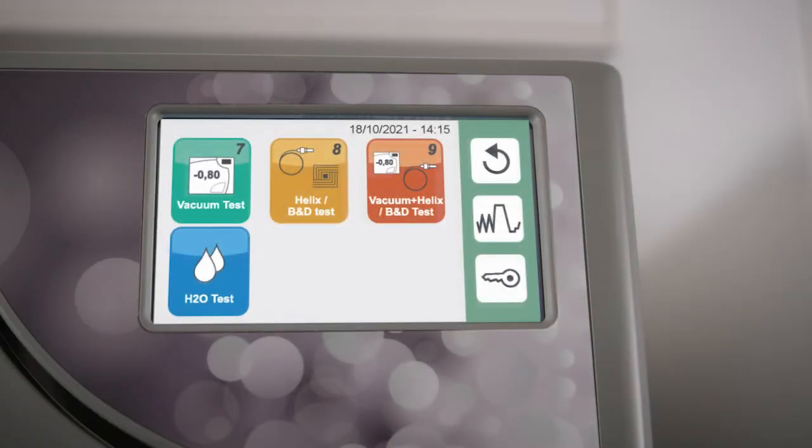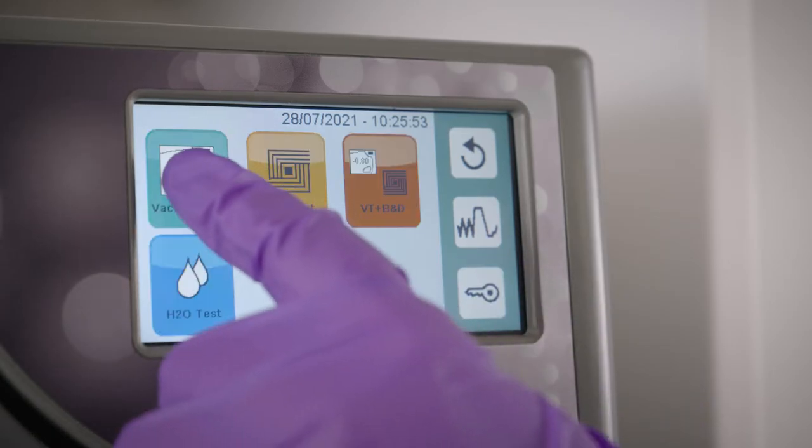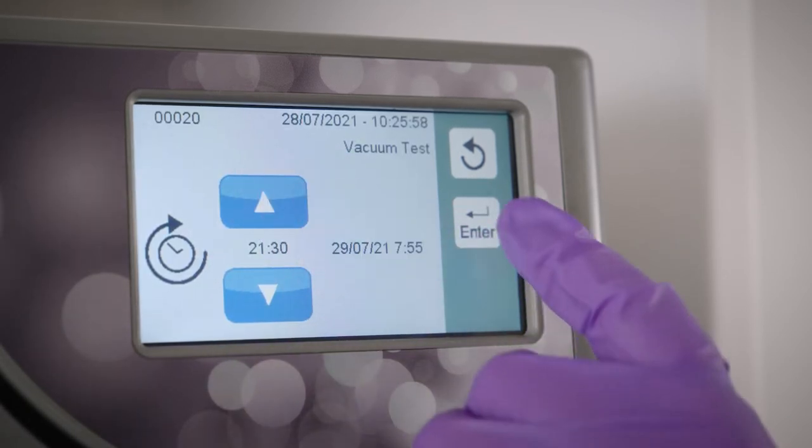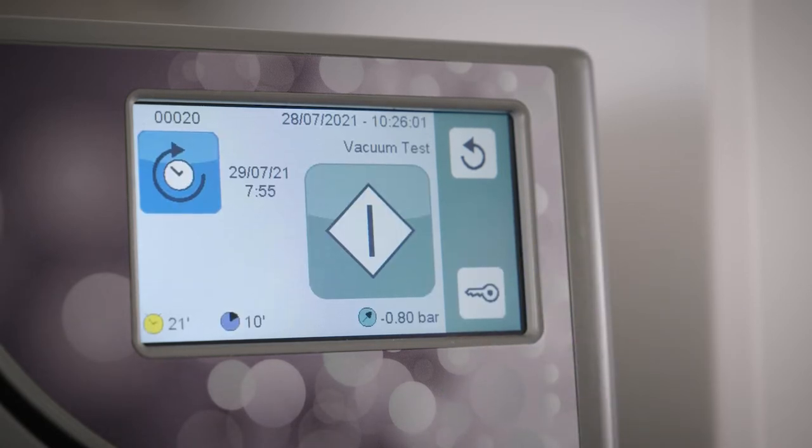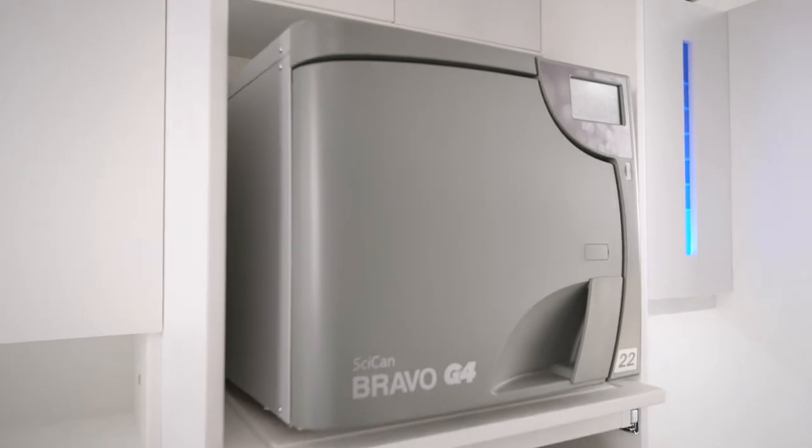The Bravo G4 offers three test cycles to periodically check the unit's effectiveness. A vacuum test, designed to run during a cold cycle at the start of the day. A helix or Bowie-Dick test, and a cycle that allows the vacuum and helix or Bowie-Dick test to run back-to-back. If the office wishes, these tests can be set to run prior to your office opening, allowing you to begin sterilizing instruments as soon as your office opens. Follow the instructions in the operator's manual for properly performing these tests. Please follow local guidelines for the required frequency for performing all sterilization monitoring tests.